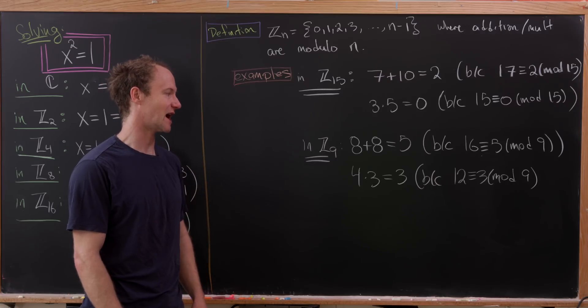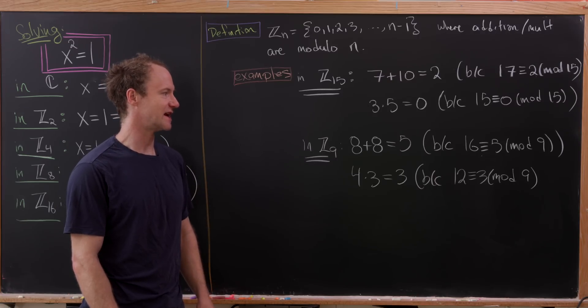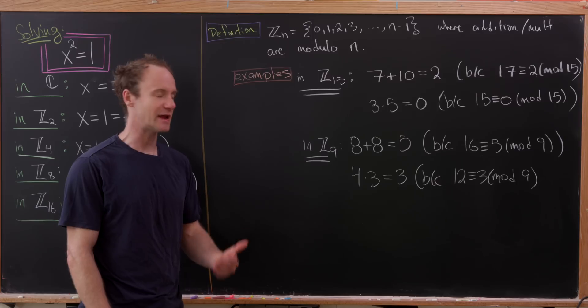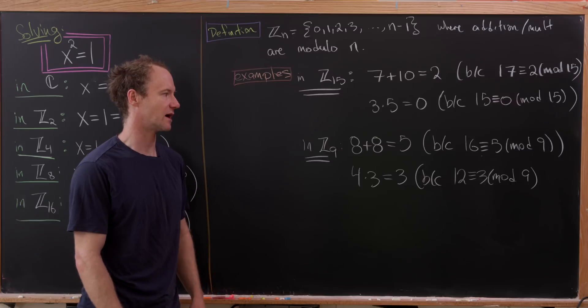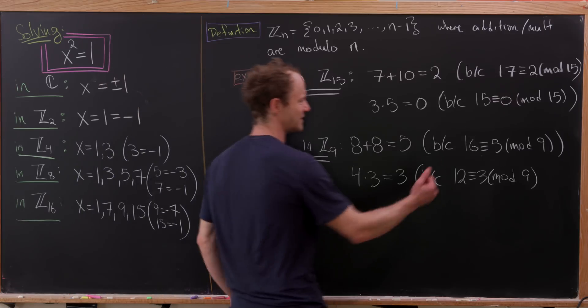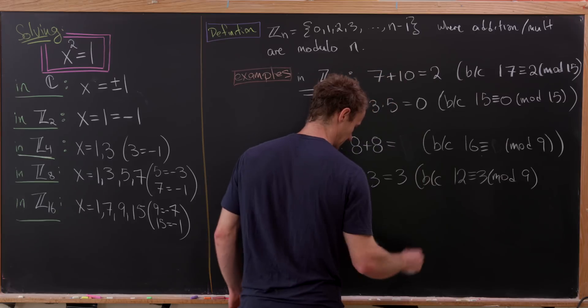Now let's look in ℤ₉. We have 8+8 = 5. That's because 8+8 is 16, but 16 is congruent to 5 mod 9. Oh, sorry, that should be 7 mod 9.